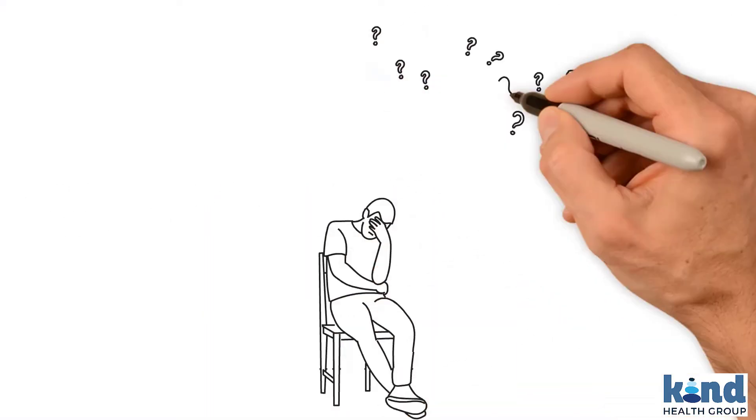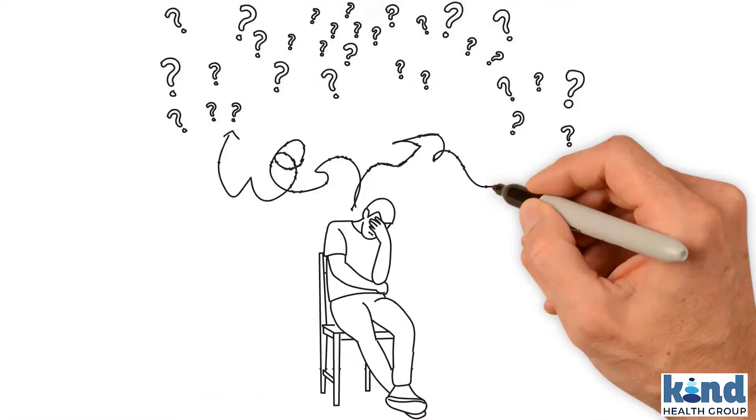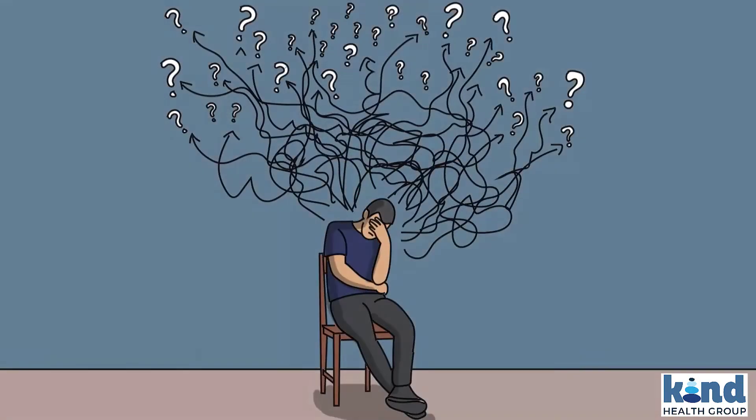Sometimes when we're anxious or depressed, our brain gets stuck in these negative pathways, making it difficult to regulate our mood.